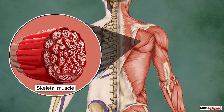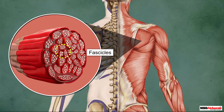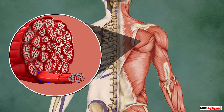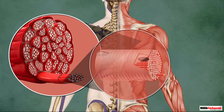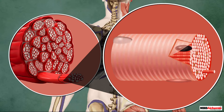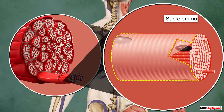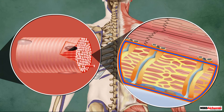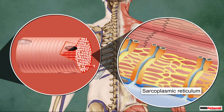Each skeletal muscle in our body is made of numerous muscle bundles or fascicles. These bundles are held together by a common collagenous connective tissue layer called the fascia. Each muscle bundle consists of a large number of physiological units called muscle fibers or muscle cells. Each muscle fiber is an elongated structure lined by a plasma membrane called the sarcolemma.